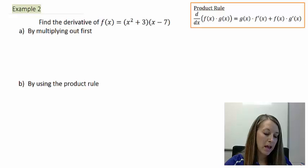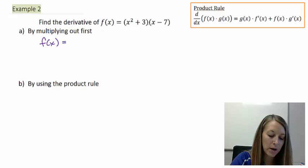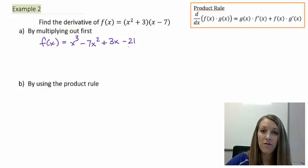So in part A, all we need to do is FOIL it out first. So our equation, notice I'm still using f(x) here, is first x squared times x, which is x cubed, minus my outside of 7x squared, plus my inside of 3x minus 21.